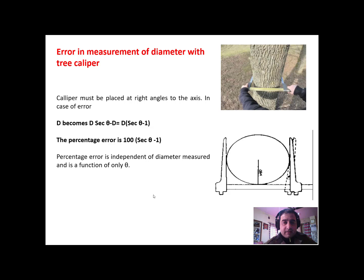There is one more error involved in the measurement of diameter with a tree caliper is the placement of caliper. While you place your tree caliper along the tree stem, you have to take care that your arms, arms of the tree, these are the arms, this is the fixed arm of the caliper and this is the movable arm. You can see if your arm is slightly bent, this is certainly supposed to give you an error.